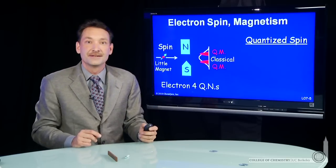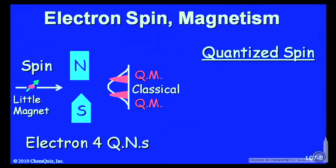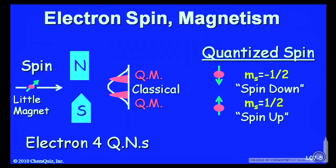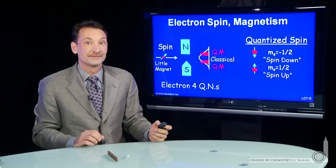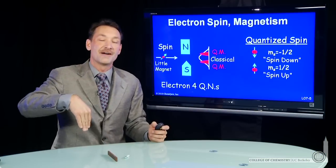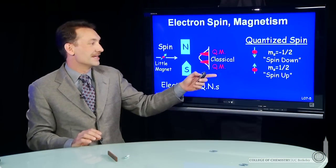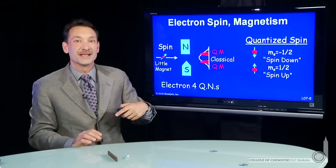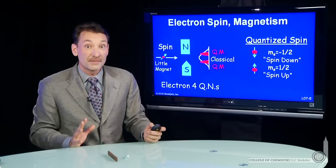So we're going to call this property of the electrons their spin. We're going to give it a quantum number, m sub s. And we're going to let it have two values. Spin up, m sub s one half. And spin down, m sub s minus one half. Plus one half and minus one half will be the spin values for the electron spin. So that's another quantum number.